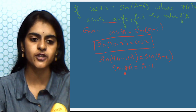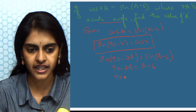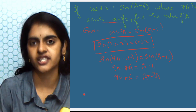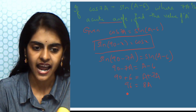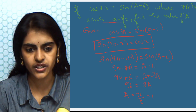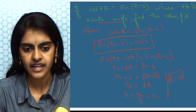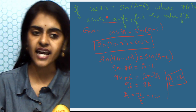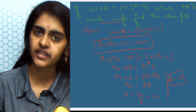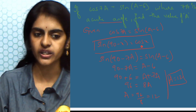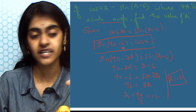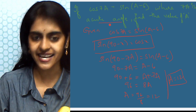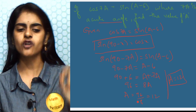Since both sides are sine of an acute angle, I can equate the angles: 90° − 7a = a − 6°. Rearranging — bring the constant to one side and the 'a' terms together: 90° + 6° = a + 7a, so 96° = 8a, giving a = 96/8 = 12°.